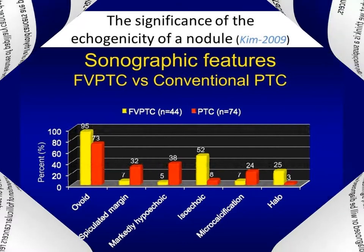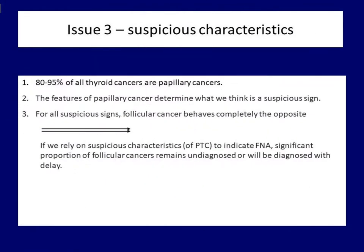So what are the consequences? If we rely on suspicious characteristics of papillary cancer when indicating FNA, a significant proportion of follicular and follicular-variant papillary cancers less than 2 cm in maximum diameter will remain undiagnosed. This ratio is 50% in the event of follicular cancer. This concern affects all guidelines published after 2006 and all thyroid systems, because they rely on suspicious findings of papillary cancer when indicating FNA in all thyroid nodules.